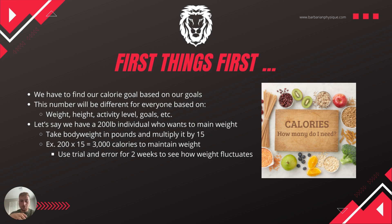During this two-week experiment, you want to keep everything as consistent as possible. Keep your daily activity the same, don't drastically increase or reduce your step count, keep your workouts the same, your water intake the same, your sleep the same, and your stress levels the same. Keep your entire lifestyle the exact same, because you want as little fluctuations as possible. Constantly changing things makes it really difficult to know how many calories you actually need.